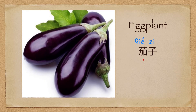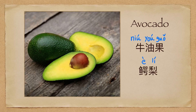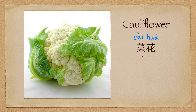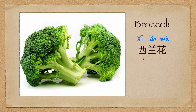茄子 (eggplant). 牛油果 / 厄梨 (avocado). 菜花 (cauliflower). 西兰花 (broccoli).